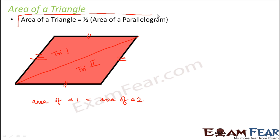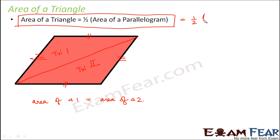Since the two triangles are congruent, the area of one triangle is half the area of the parallelogram. The area of a parallelogram is base times height, so the area of a triangle is half times base times height.